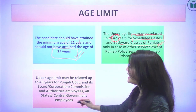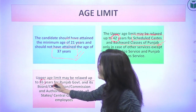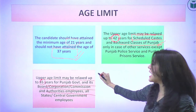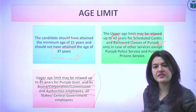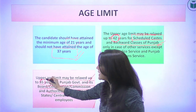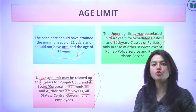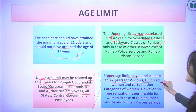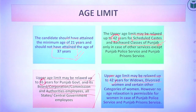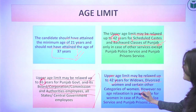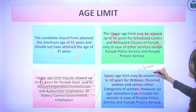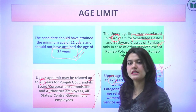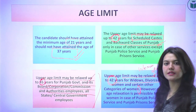The upper age limit may be relaxed up to 45 years for Punjab government and its boards, corporations, commissions, and authority employees — whether employed in Punjab government or central government. Additionally, the upper age limit may be relaxed up to 42 years for widows, divorced women, and certain other categories of women.